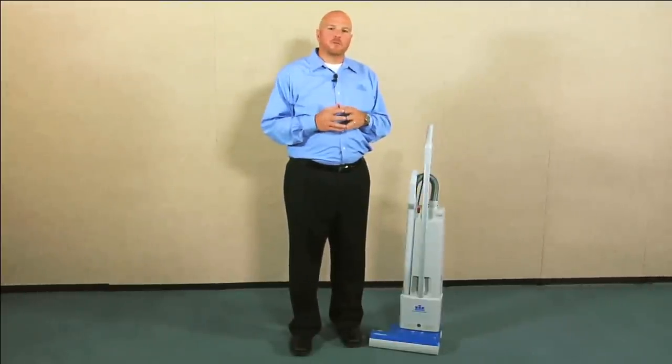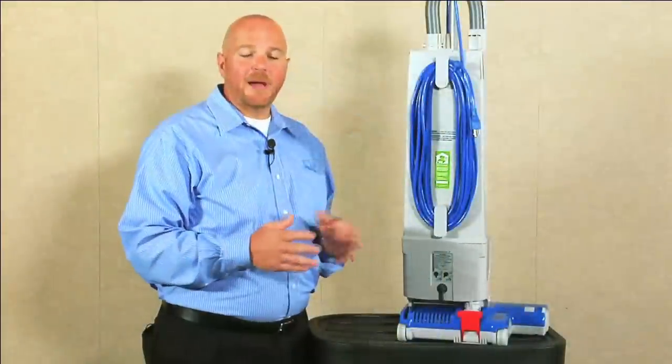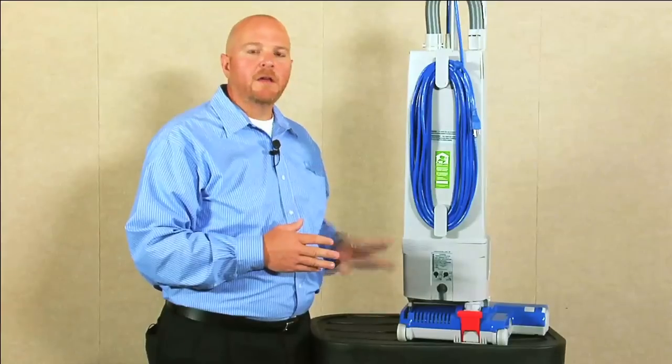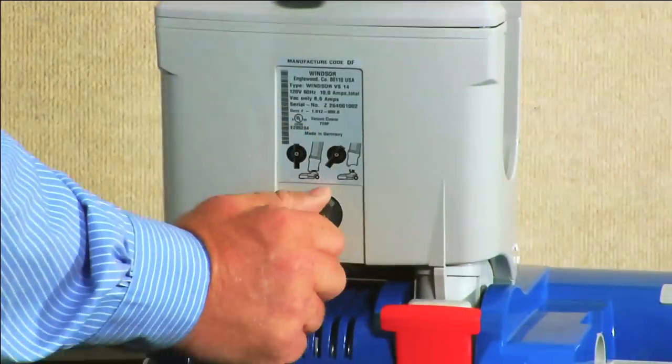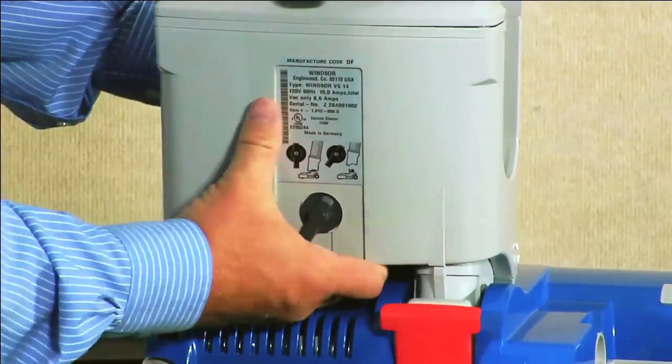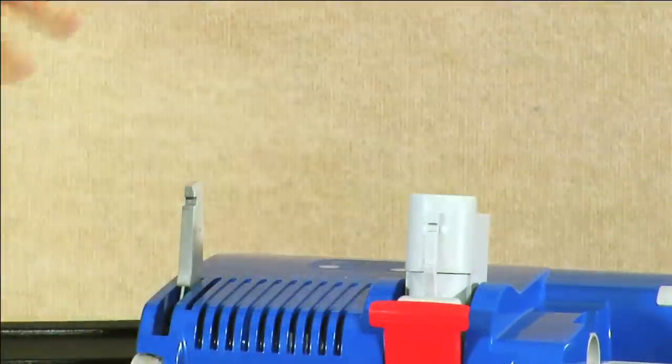Let's begin our tour of the Versimatic by taking a look at the power head. To access the power head, you'll need to remove it from the body of the vacuum. Start by turning the switch clockwise and then lifting the body off of the power head.